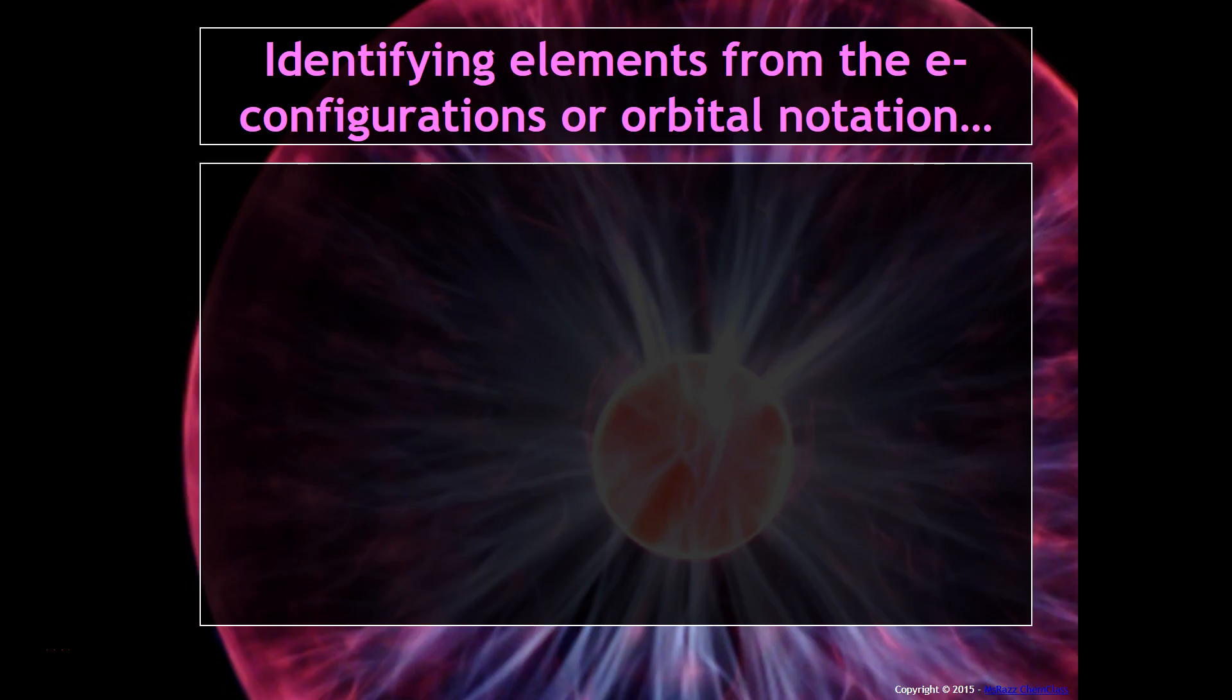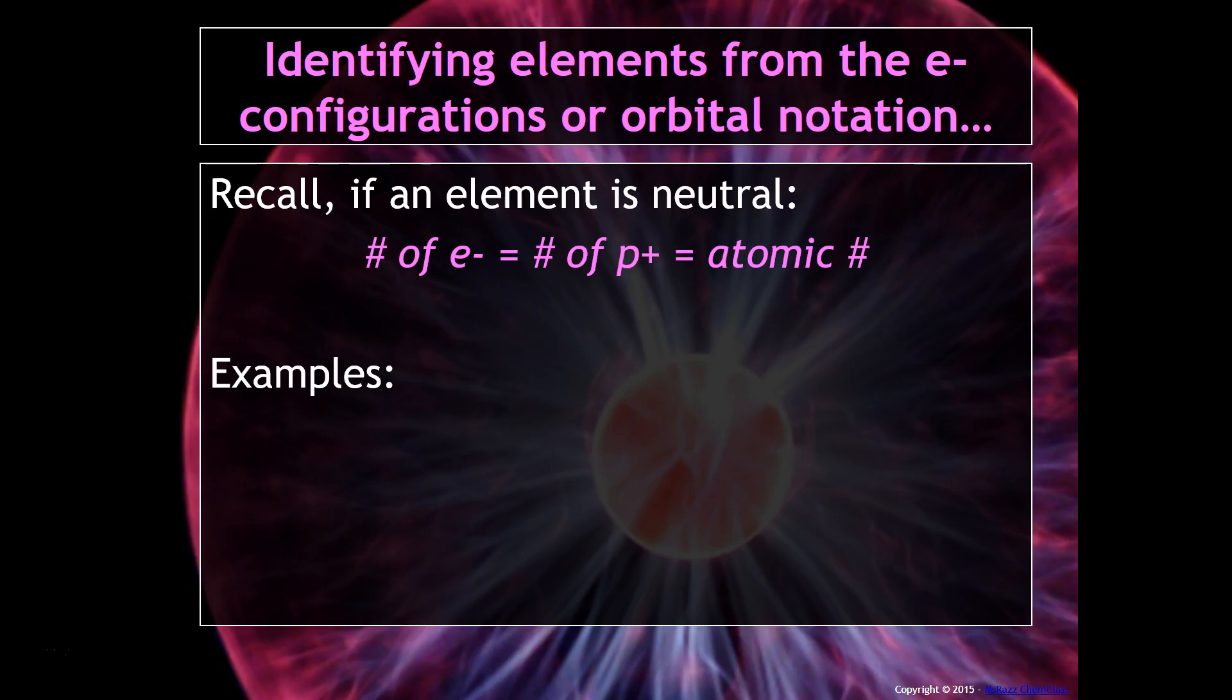The last part of this presentation is about identifying elements from their electron configurations or orbital notations. So if an element is neutral, the number of electrons equals the number of protons which is also the same as the atomic number. If you were given this electron configuration, you would have to count up the number of electrons that you have and then you can match that to the atomic number on the periodic table.